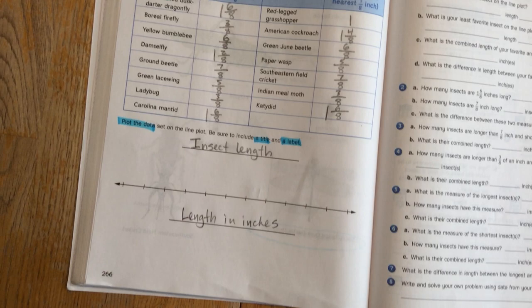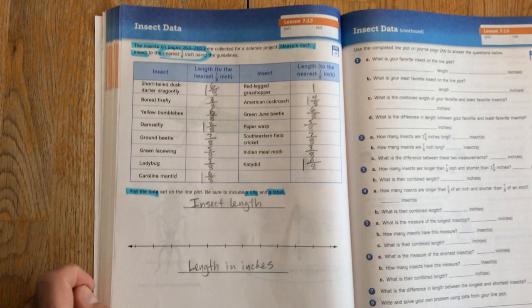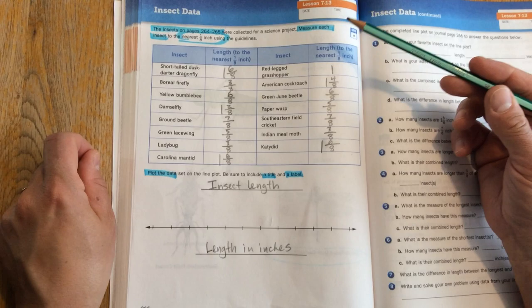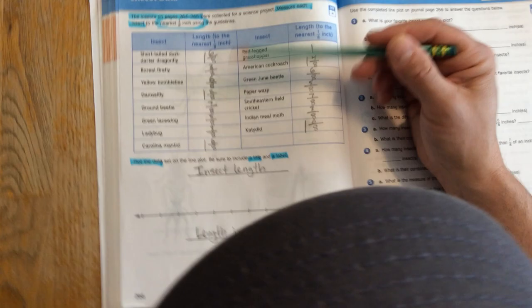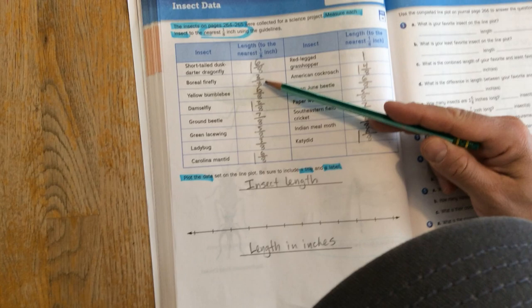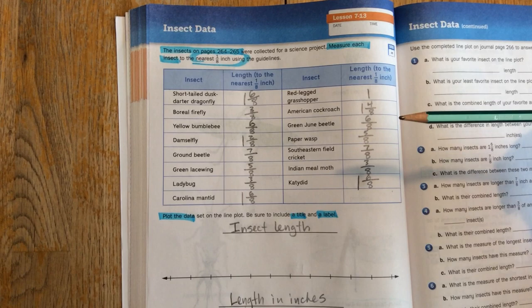Okay, so now what we have to do is we need to create a line plot that spans the length of the smallest measurement and the longest measurement. So the first thing I want to do is I want to look to see what is the smallest measurement. That boreal firefly was 3 eighths of an inch. So let's see if I can find anything smaller than 3 eighths. I cannot.